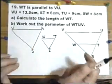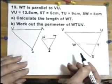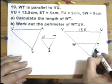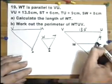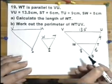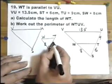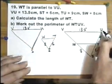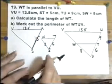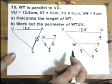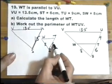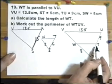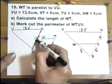Now whether you work with the diagram like this or like that is up to you. VU is 13.5, ST is 6, TU is 9, that part is 9, SW is 8. Now the only difference between these two diagrams is on this diagram I'll have an 8 there and a 6 there. On this diagram I'll have 13.5 there, but here I will have 15. And that is very important.